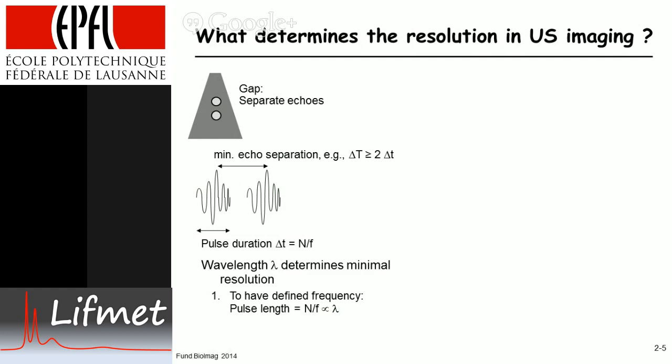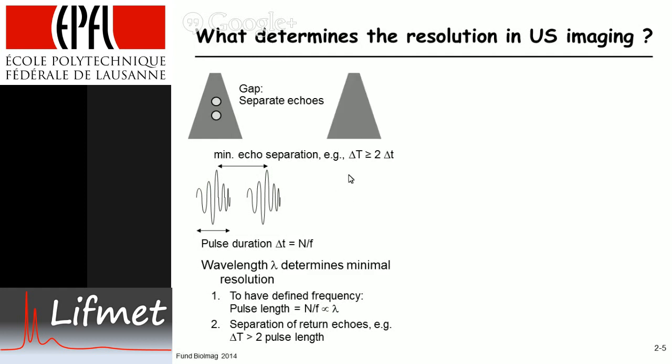We need a minimum echo separation: a Delta T that should be bigger than two times small delta-t, where small delta-t is the length of each pulse. This could be two or three times — again, the numerical value is not critical, it's the principle that's important. We need to give the algorithm a chance to identify two different echoes, two different maxima, two different events, so the computer can separate them. The minimum separation of the return echoes is around two times the pulse length.